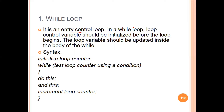If the condition is true, the body of the loop will execute. That is why it is called the entry control loop — the condition is checked at the entry. The loop control variable should be initialized before the loop begins. When the loop starts, we have to do four steps: initialize the loop variable or control variable.